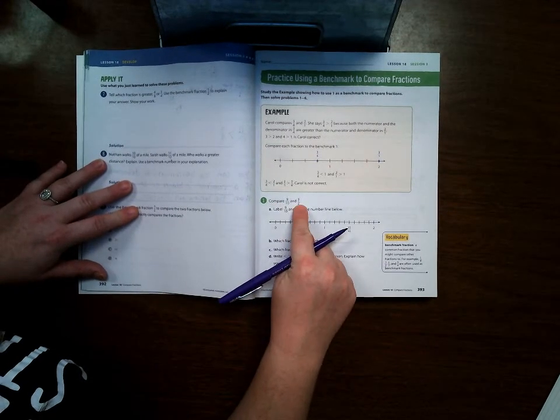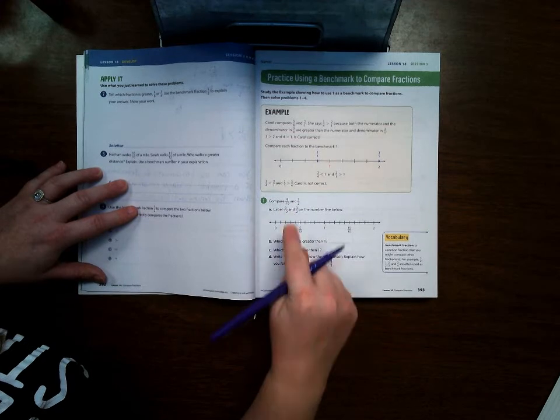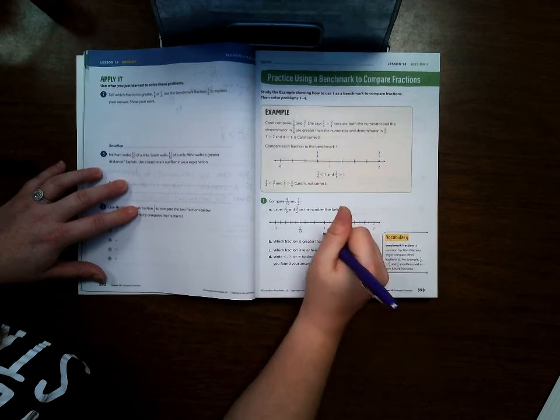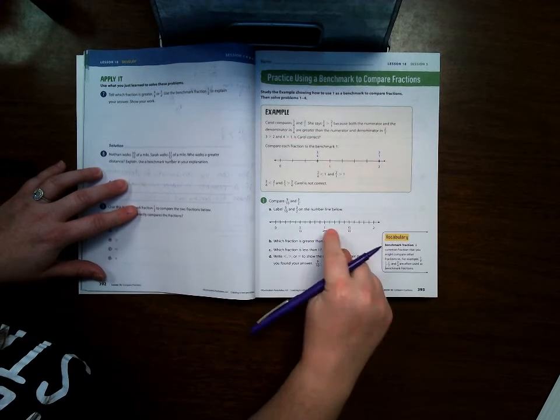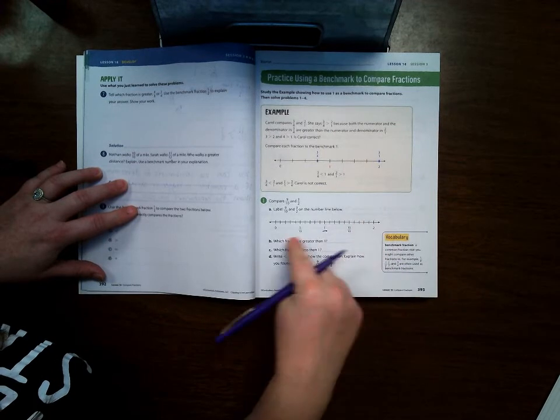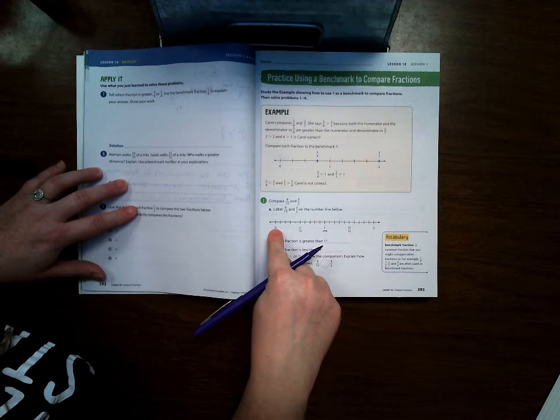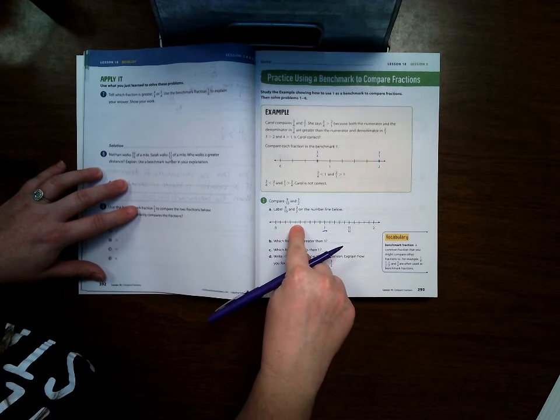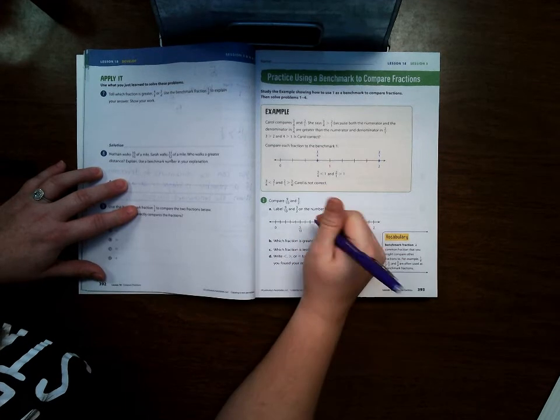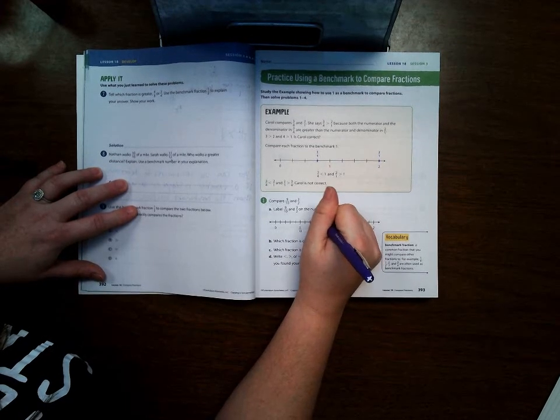Compare nine-tenths and three-halves. Nine-tenths, we have one whole here. That means everything here would be 1 and something. Nine-tenths would be 1, 2, 3, 4, 5, 6, 7, 8, 9. So nine-tenths would go here.